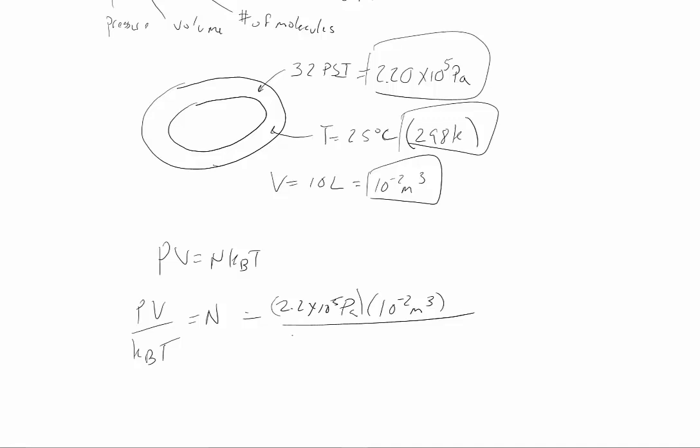We have 10 to the minus 2 cubic meters. We have Boltzmann's constant, which is 1.38 times 10 to the minus 23. And we have the temperature, which is just 298 Kelvin.